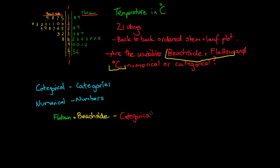So we can write that down and say that our Flat Town and Beachside, they're categorical variables. So the data is either from Flat Town or Beachside.